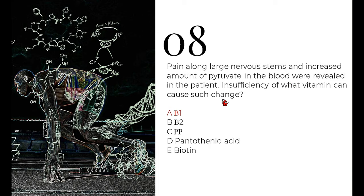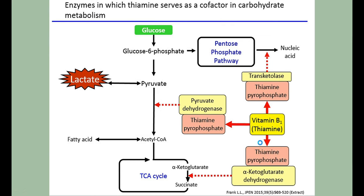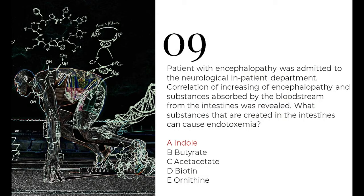The next question: a patient with encephalopathy was admitted to a neurological department. Correlating increasing encephalopathy with substances absorbed from the intestines — they ask what substances created in the intestine can cause endotoxemia. The large intestine is home to bacterial microflora. Bacteria synthesize products from incompletely absorbed substances of digestion. Some products are useful: vitamin K, vitamin B12, and certain alcohols. But ammonia and some toxic substances are also synthesized.